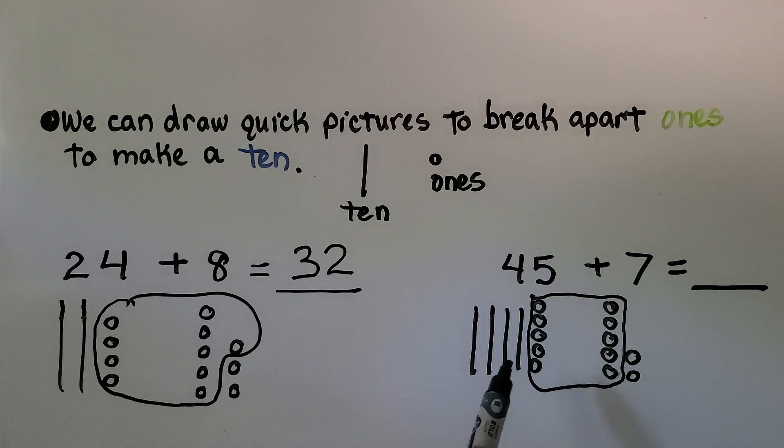So we can group these 5 with 5 from the 7 to make a ten. Now we have 4 tens, 5 tens, 2 ones. Do you know what 5 tens, 2 ones is equal to? If you said 52, you're correct.